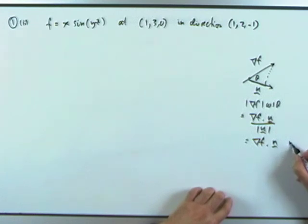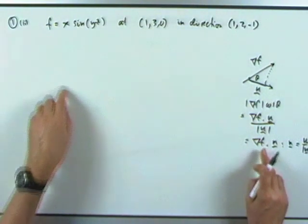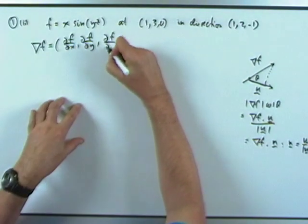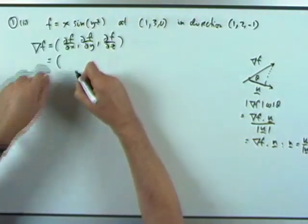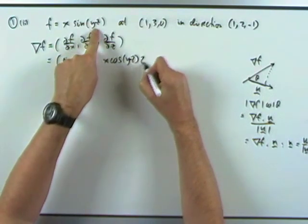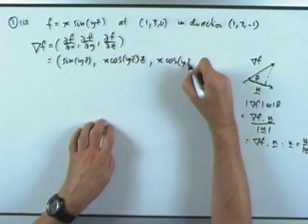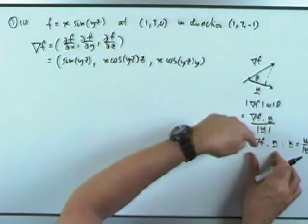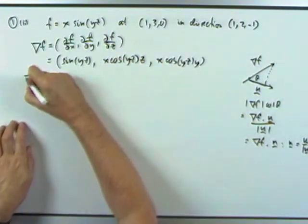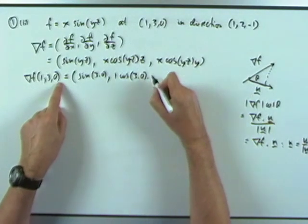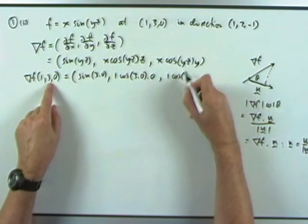So n equals u divided by its own length, leaving a unit vector. We need two parts: grad f and n. For grad f, we take the partial derivative in three different directions. The partial with respect to x is just sin(yz). The partial with respect to y is x·cos(yz) times z. The partial with respect to z is x·cos(yz) times y. Now evaluating at the point (1,3,0): sin(3×0) gives 0; 1·cos(3×0)·0 gives 0; and 1·cos(3×0)·3 gives 3.